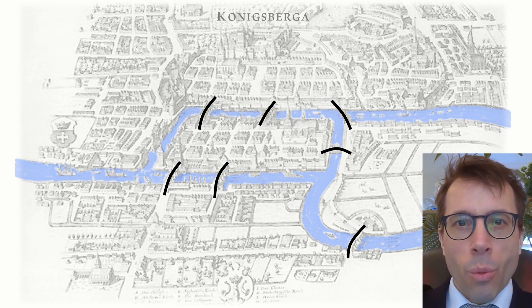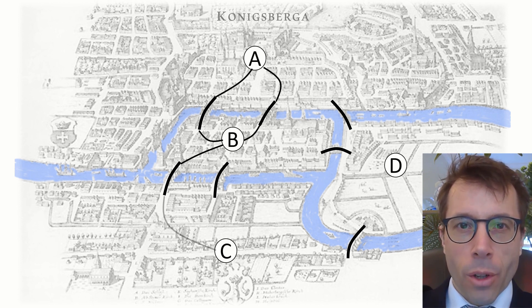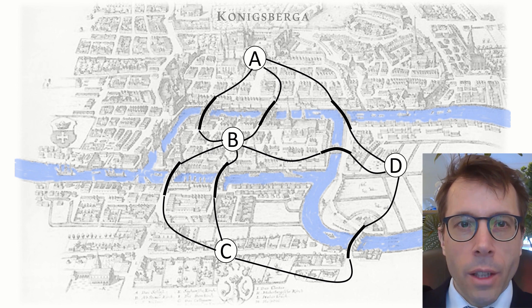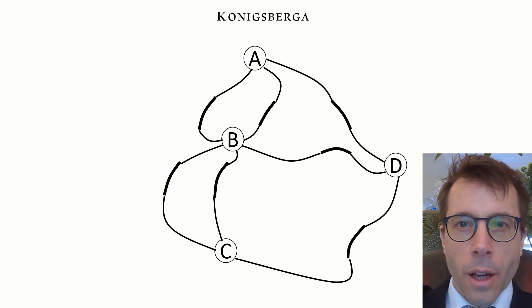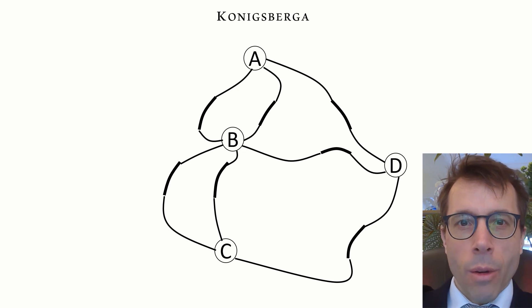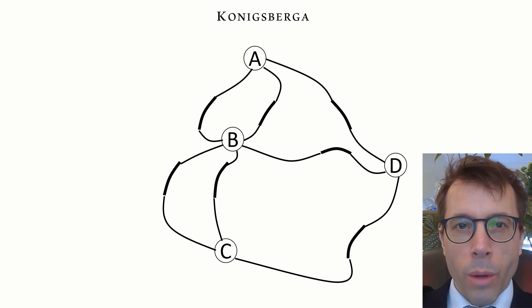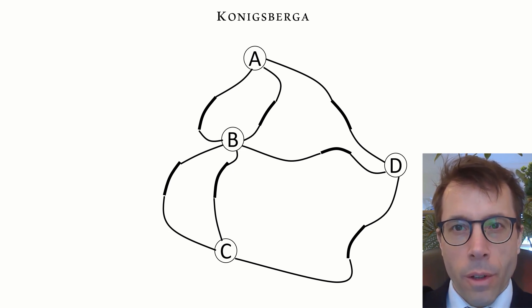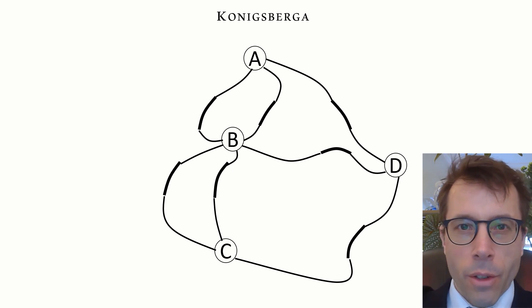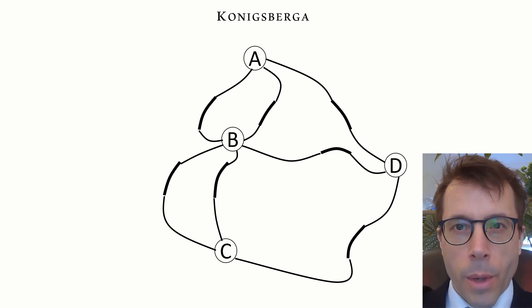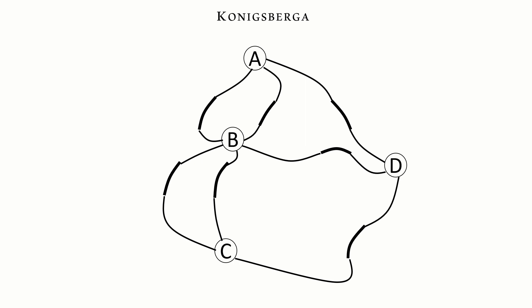He realised it doesn't matter what exact streets you walk along. All that matters is which of these four land masses you're on — A, B, C, or D — and how you get between them. We can forget about the map completely and think purely about this set of four vertices and seven edges, and turn the original question — can I go for a stroll that crosses each bridge exactly once — into what we would now call a discrete maths question about a graph. That's the birth of graph theory.